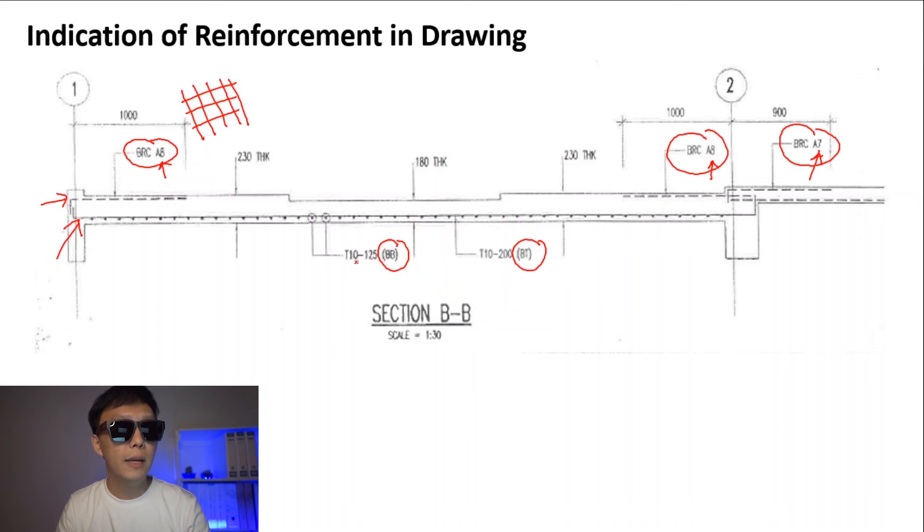Let's look at the bottom reinforcement. It is indicating the information with T10125. It means it is a high tensile steel bar, T is the code, and 10 is the diameter of the bar itself. 125 means the spacing between the bars, so the spacing between the bars here is 125 from center to center. This is how we read the drawing for the bottom bars.